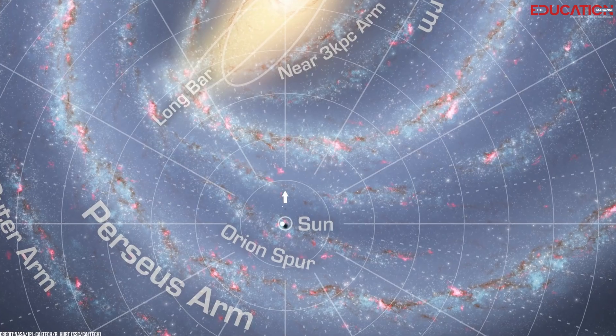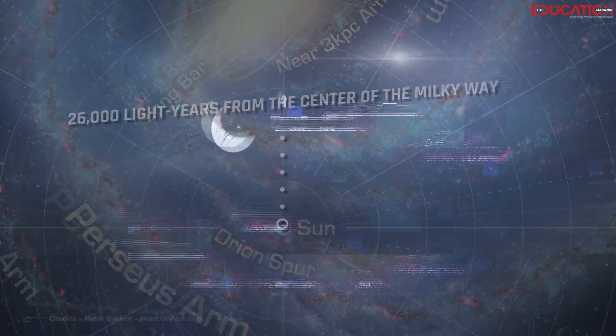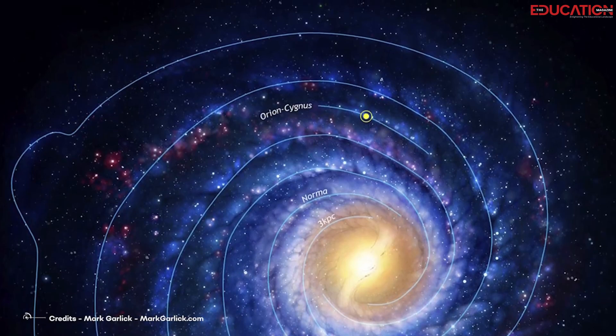Today, our solar system is located about 26,000 light-years from the center of the Milky Way. We are also located in the Orion Arm about two-thirds of the way from the galaxy's center.